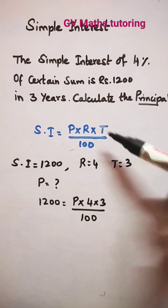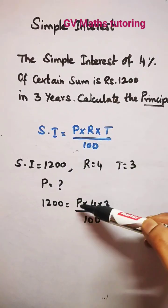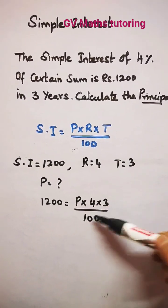Now substitute the values in the formula, that is SI equal to 1200 equal to P, we have to find out, into R is 4 and T value is 3 divided by 100.